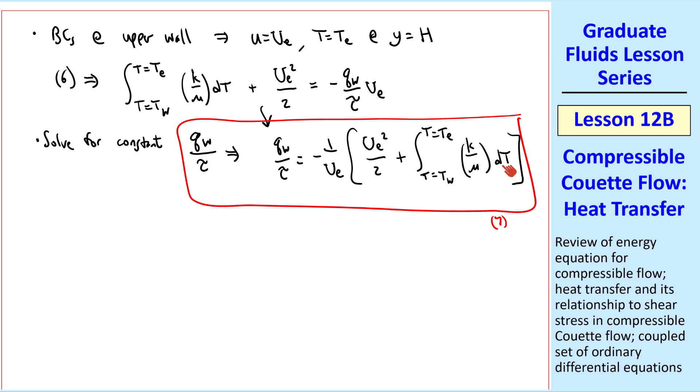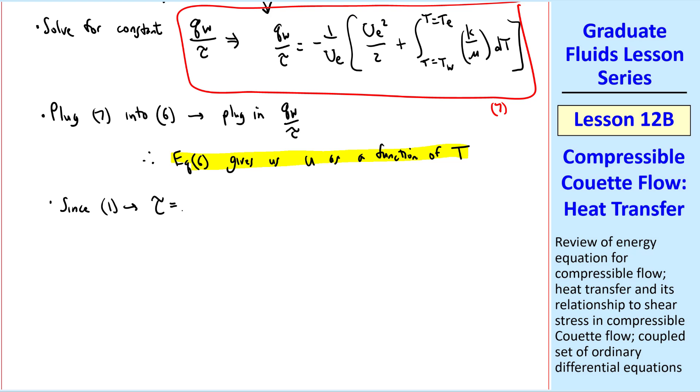Let's pause and think about what we've done. If we know k and mu as functions of temperature, we should be able to integrate this. We know ue, so therefore, we can calculate qw over tau for a given fluid moving at a given speed with these temperatures. We then plug equation 7 into 6, in other words, plug in qw over tau. Therefore equation 6 gives us u as a function of t. This is essentially our solution, but it's a little tricky since we have to do it implicitly.